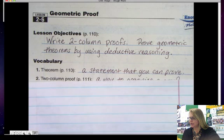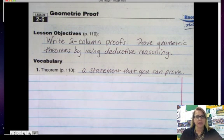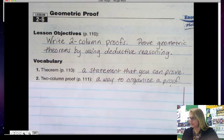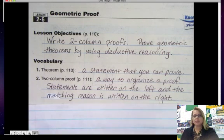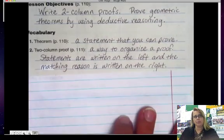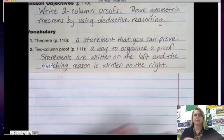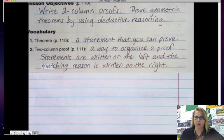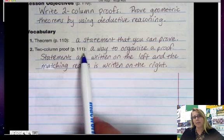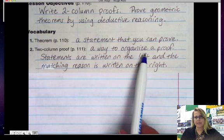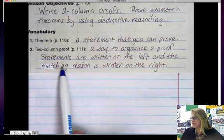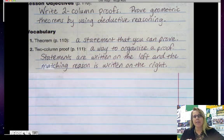So first of all, some vocabulary terms. What is a theorem? A theorem is a statement that you can prove. And you usually do that with a two-column proof. There are other ways of writing proofs, but a two-column proof is the most common way to organize the proof. The statements are written on the left, and the matching reason is written on the right. We will be writing a proof today.